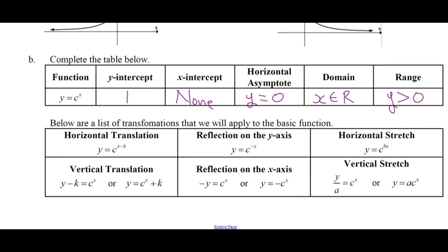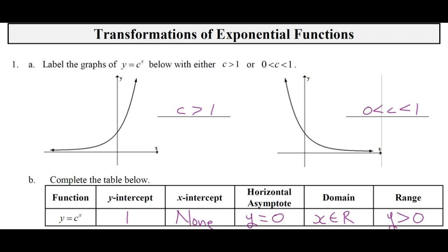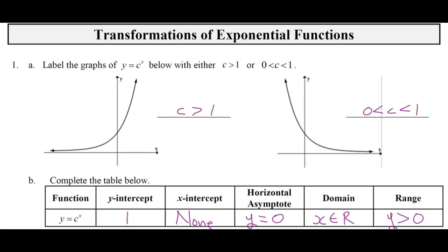Here is our list of transformations that we will apply to basic functions. A horizontal translation: x is replaced by x minus h. Reflection on the y-axis: x is replaced by negative x. Horizontal stretch: x is replaced by dx. A vertical translation: y minus k equals c to the x, or y equals c to the x plus k. Reflection on the x-axis: negative y equals c to the x, or y equals negative c to the x. And a vertical stretch: y over a equals c to the x. These are the most common. So those are the transformations we're going to apply to basic exponential functions, like 2 to the x and 1/2 to the x.